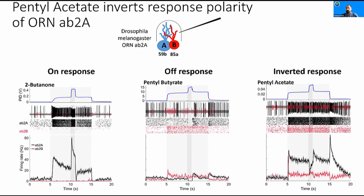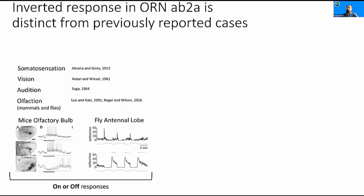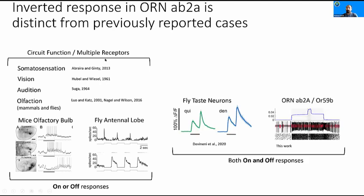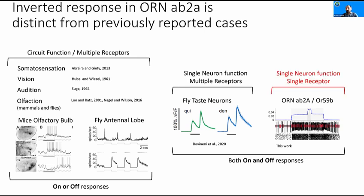Although this is a unique and novel response type, on and off responses are already shown in the field, including in mammal and insect olfaction. However, these responses are either a circuit function involving many neurons acting on each other, or the neuron is expressing multiple receptors. The inverting response I showed is also recently shown in fly taste neurons, but those neurons express multiple receptors — anywhere between 4 to more than 10. Therefore, this phenomena is unique in that it happens in a single neuron expressing a single receptor, mediated by a single molecule odorant.